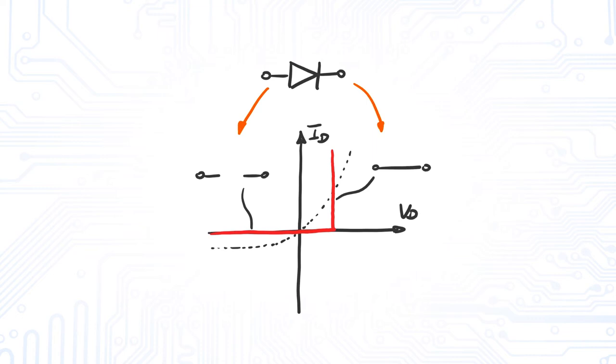To represent the 0.7 volt threshold, we add a voltage source to the short.